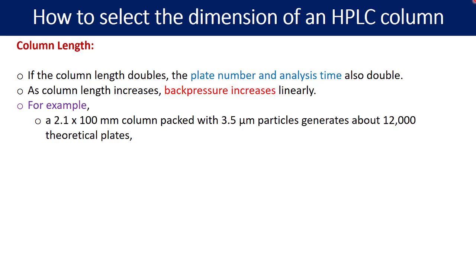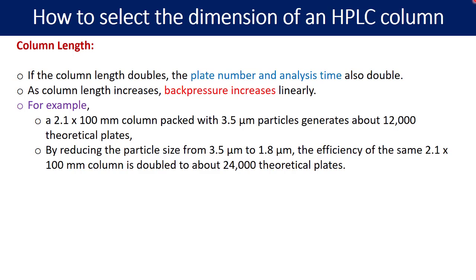For example, a 2.1 by 100 mm column packed with 3.5 micron particle generates about 12,000 theoretical plates. Now by reducing the particle size from 3.5 to 1.8 micron, the efficiency of the same 2.1 by 100 mm column is doubled to 24,000 theoretical plates. We discussed this increase in the plate counts with the decrease in the particle size just few slides before.